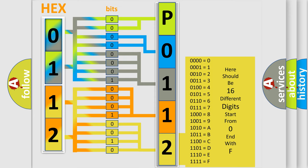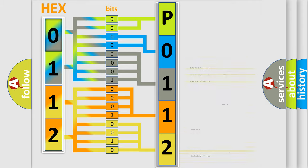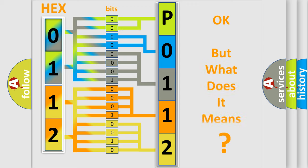A single byte conceals 256 possible combinations. We now know in what way the diagnostic tool translates the received information into a more comprehensible format. The number itself does not make sense to us if we cannot assign information about what it actually expresses.